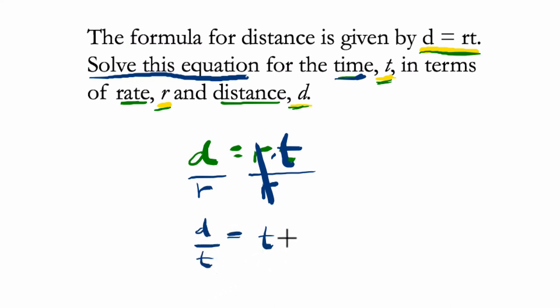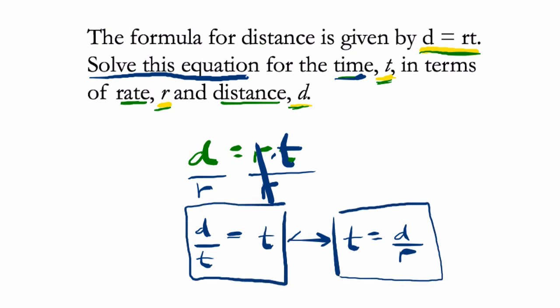Or I could switch things around, right? And just write time equals distance over rate. I just reverse the side that the variables are on to show it in two different ways. These two are, of course, both equal. Thank you.